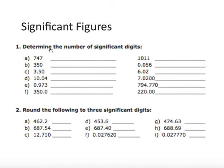Work on these examples. 747 — this would have three significant digits or three significant figures. 350, however — notice there is no dot at the end of this number. Because there is no dot, this would only have two significant figures or two significant digits.